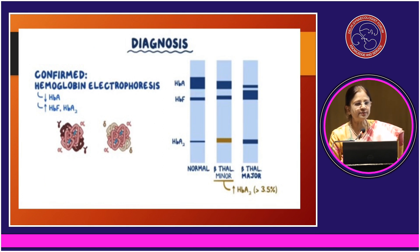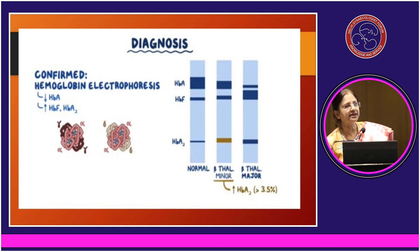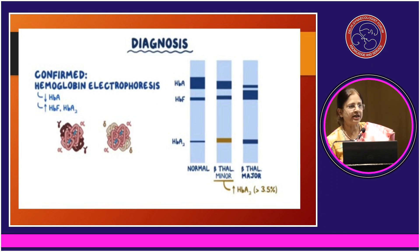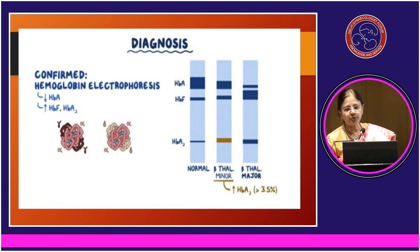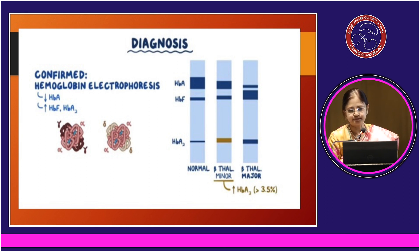To confirm the diagnosis, we look at the CBC values. The diagnosis is confirmed by hemoglobin electrophoresis. If hemoglobin A2 is more than 3.5%, it indicates beta thalassemia minor.